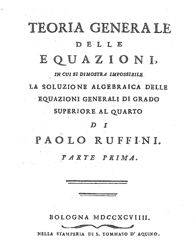Abel wrote: 'The first and, if I am not mistaken, the only one who, before me, has sought to prove the impossibility of the algebraic solution of general equations is the mathematician Ruffini. But his memoir is so complicated that it is very difficult to determine the validity of his argument. It seems to me that his argument is not completely satisfying.' The proof, as it was discovered later, was also incomplete.